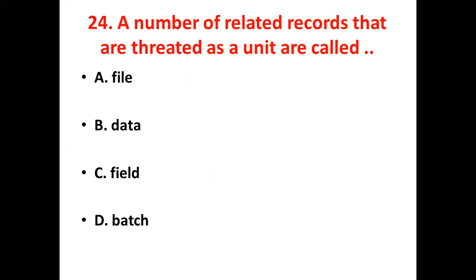24th bit: A number of related records that are treated as a unit are called dash. Option A, File. Option B, Data. Option C, Field. Option D, Batch. The answer is Option B, Data.